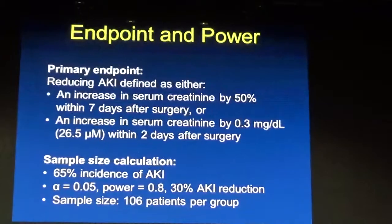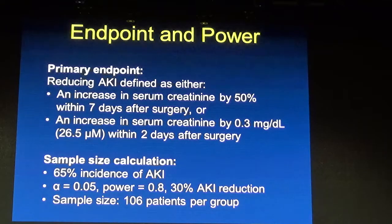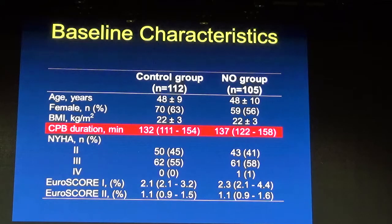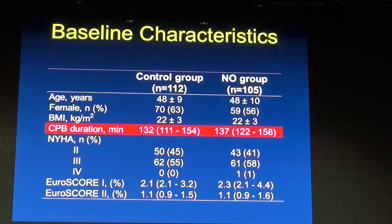The endpoint of the study was reduction of acute kidney injury, defined as an increase in serum creatinine by 50% within seven days after surgery, or an increase of 0.3 mg/dL within the first two days. We calculated the sample size based on literature showing 60–70% of Chinese patients develop acute kidney injury after these procedures, arriving at a total of 260 patients. We enrolled 112 in the control group and 105 in the nitric oxide group; patients were young — average 48 years — predominantly female (60%), with CPB time of about two hours and BMI of 22.